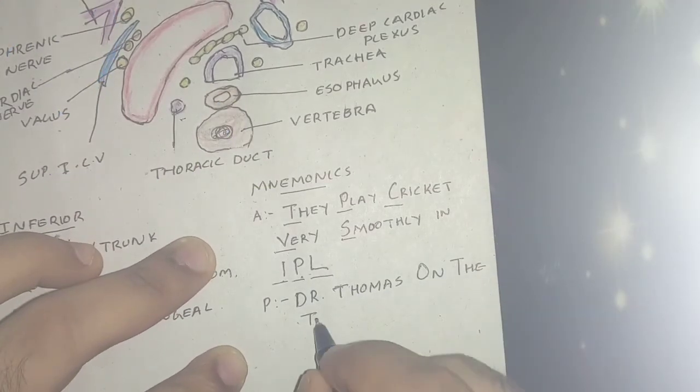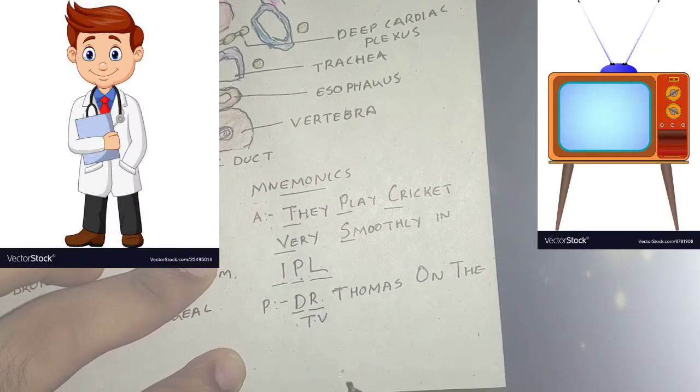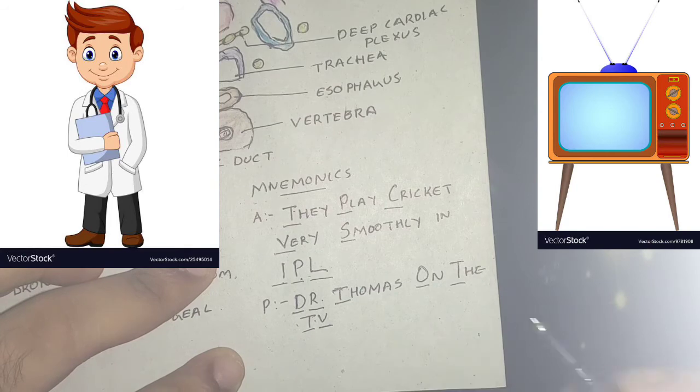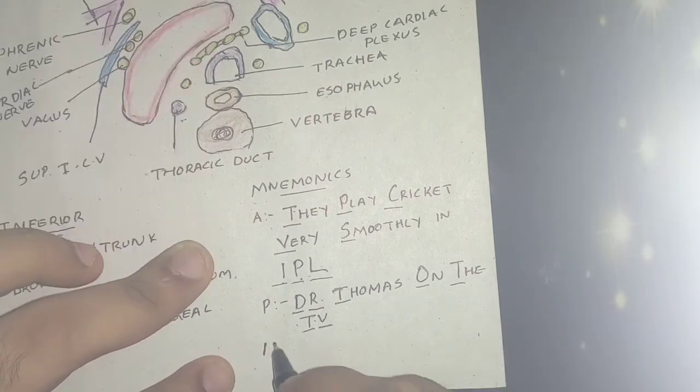For the posterior relation, the posterior relation can be remembered by DR THOMAS ON THE TV. D for the deep cardiac plexus, R for the recurrent laryngeal nerve, T for the trachea, bronchial lymph node, O for the esophagus, T for the trachea, T for thoracic duct, and V for vertebral column.